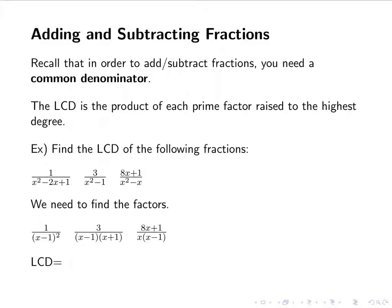So to find the LCD, again we're going to look at each prime factor. The different factors that we have are x minus 1, we have it 3 times, the highest degree we have it is squared. We also have an x plus 1, the highest power is just 1, and then we also have an x, and again the highest degree there is 1. So if we put that together, we have x minus 1 squared times x plus 1 times x, so that is the LCD.